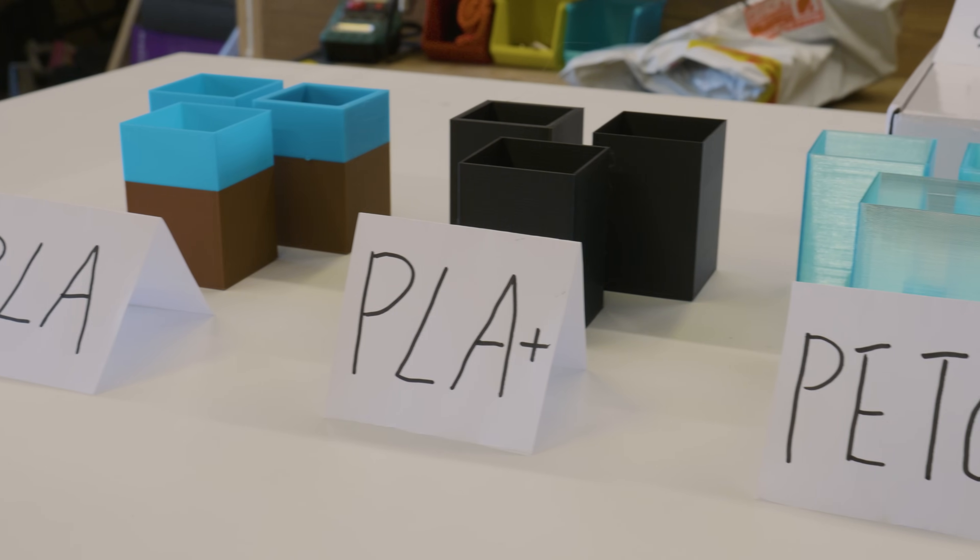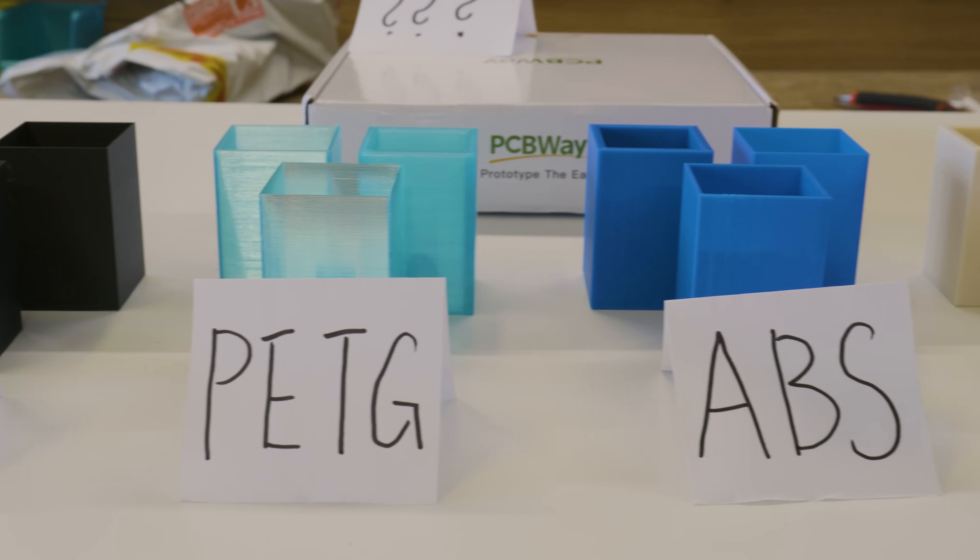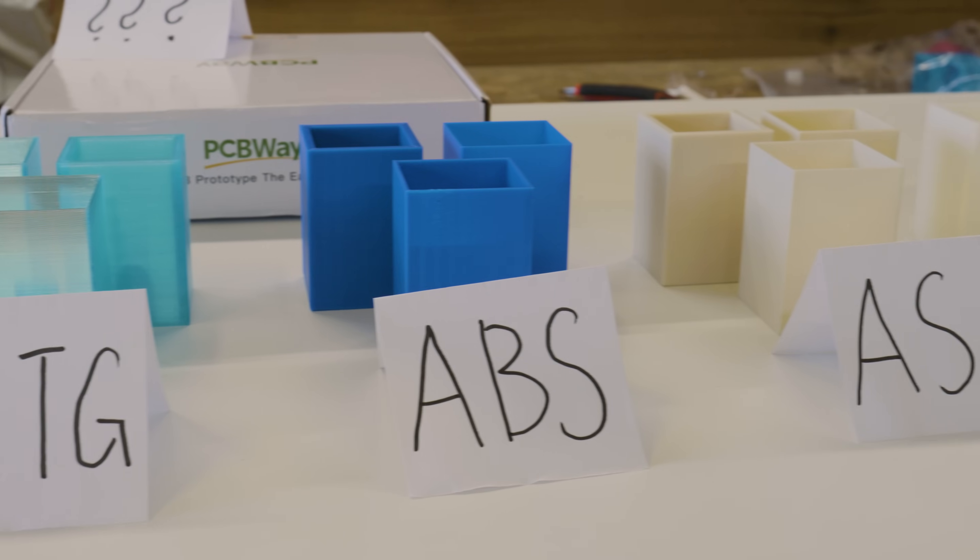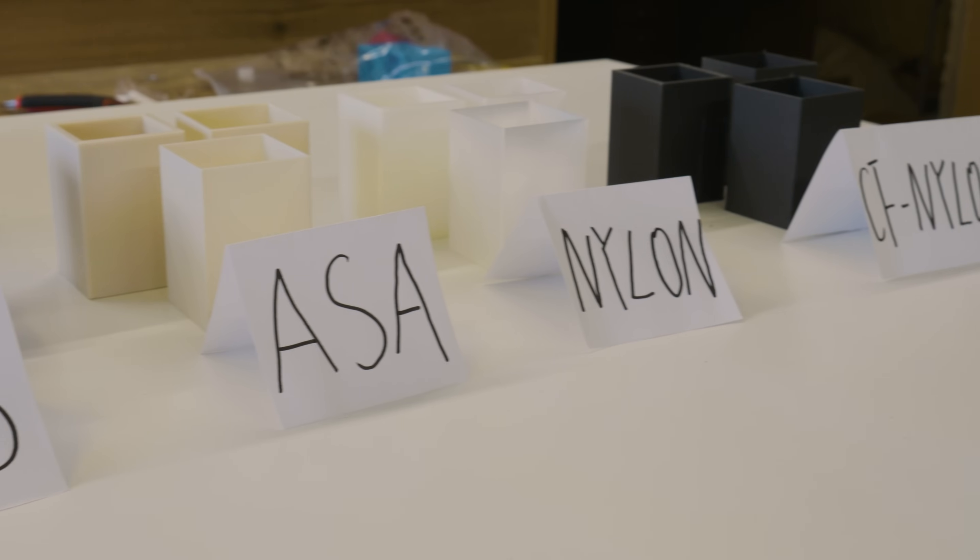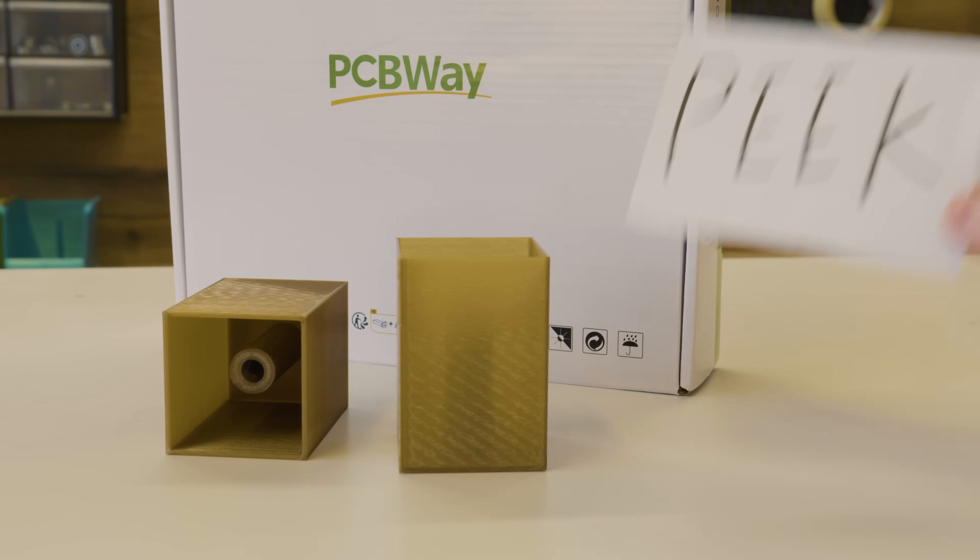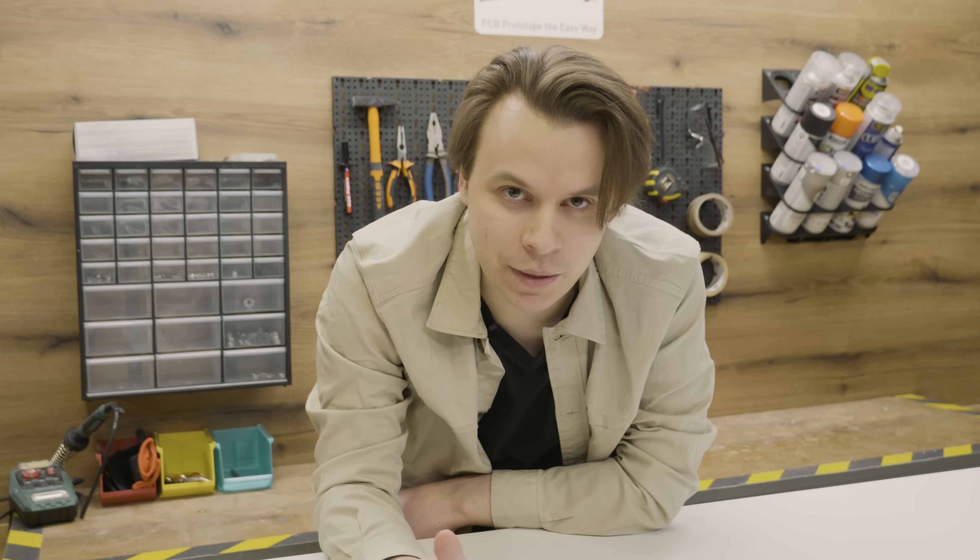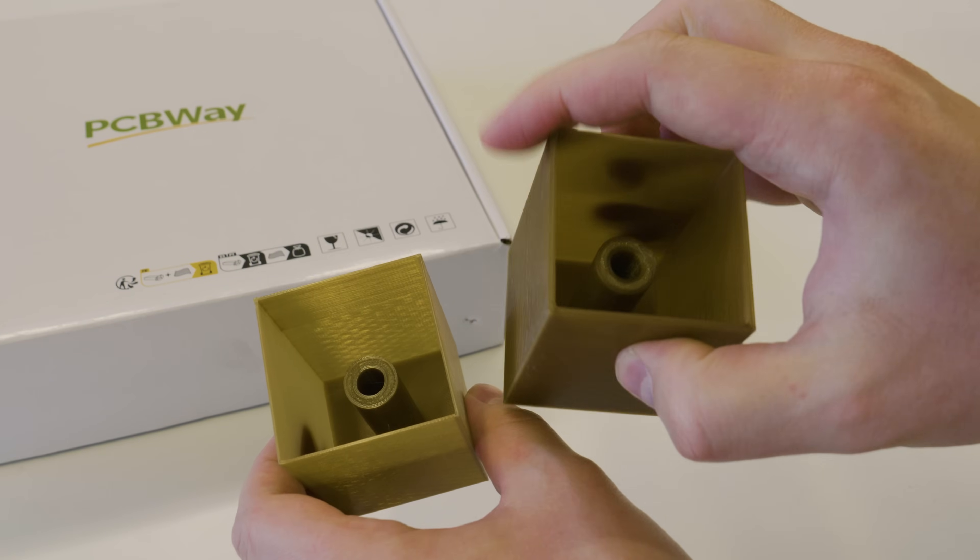The materials we are going to test are PLA, PLA+, PETG, ABS, ASA, Nylon, Carbon Fiber Nylon, and a really special filament that we have here only because of PCBWay is PEEK. This filament is military level plastic. It's extremely hard to print, heat resistant, strong, and insanely expensive. That's why I have only 2 boxes with this material.